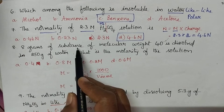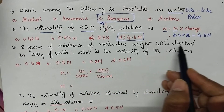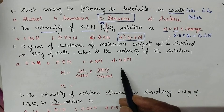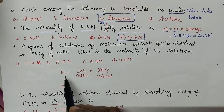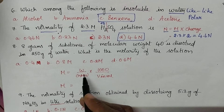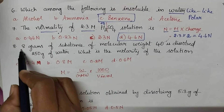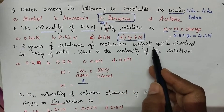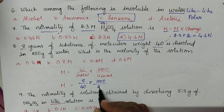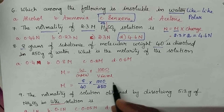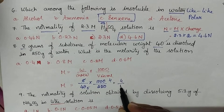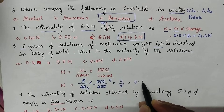8 grams of a substance of molecular weight 40 is dissolved in 250 mL of water — what is the molarity? Molarity = (weight / gram molecular weight) × (1000 / V in mL). Substituting: weight = 8 g, gram molecular weight = 40, volume = 250 mL. This gives 8/40 × 1000/250 = 4/5 = 0.8 M. Option B is the right answer.